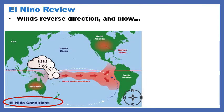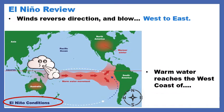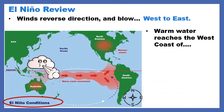El Niño Review. Please use the map on this page to help answer the questions. Winds reverse directions and blow west to east. Warm water reaches the west coast of... — use the map. Warm water is represented with the red arrows. What continent are those red arrows hitting? South America.